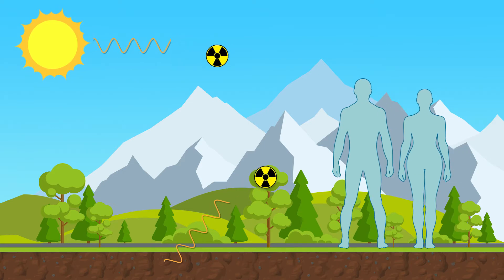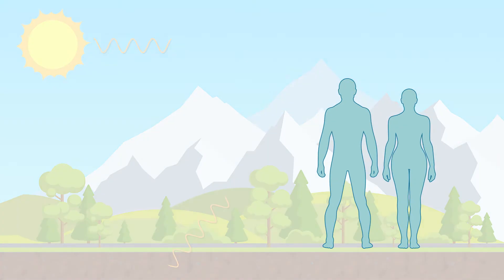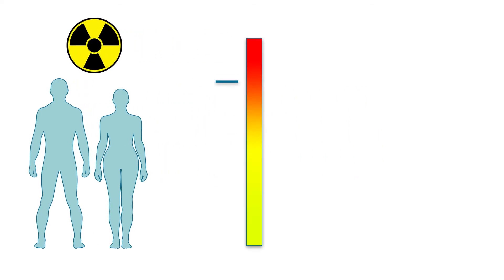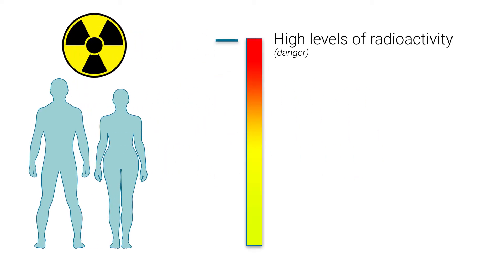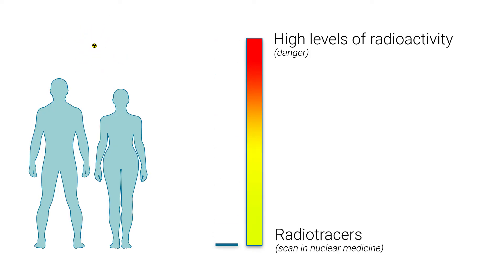Every person receives a certain amount of natural radioactivity each year. Although it is true that radioactivity is cumulative and that it can be harmful or even deadly at very high doses, in nuclear medicine we use radio tracers. The amount of radioactivity used is therefore extremely low and not alarming.